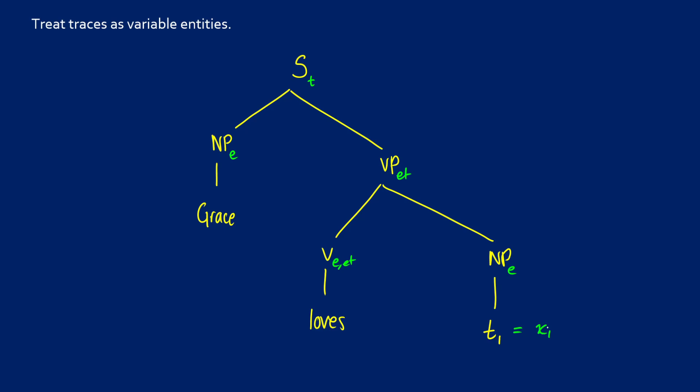And then as we go through up our tree, "Grace loves T1" is going to be true if and only if we're going to say "Grace loves," and then we're going to put our variable in there X1. So this is our inside sentence.